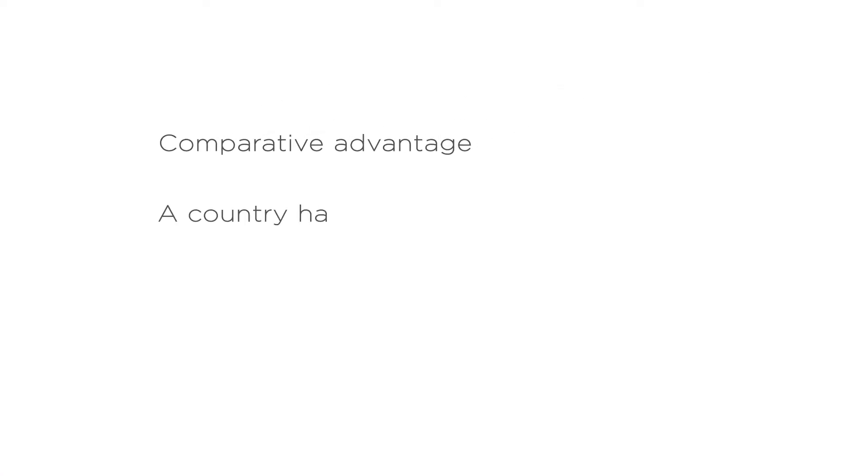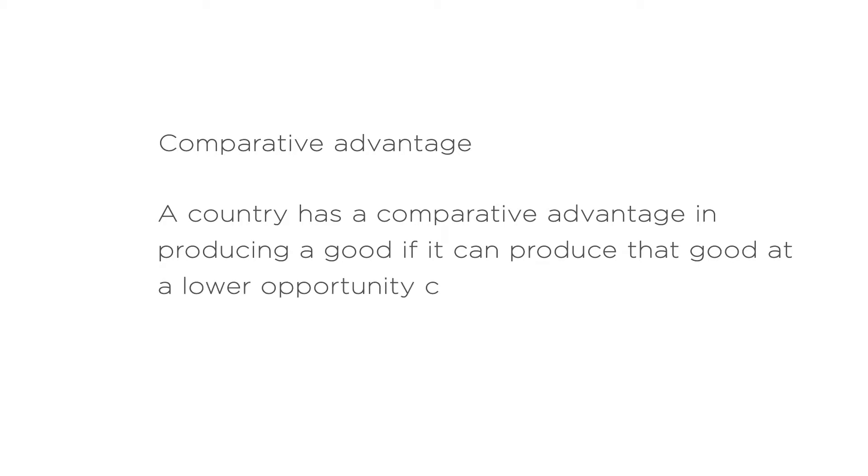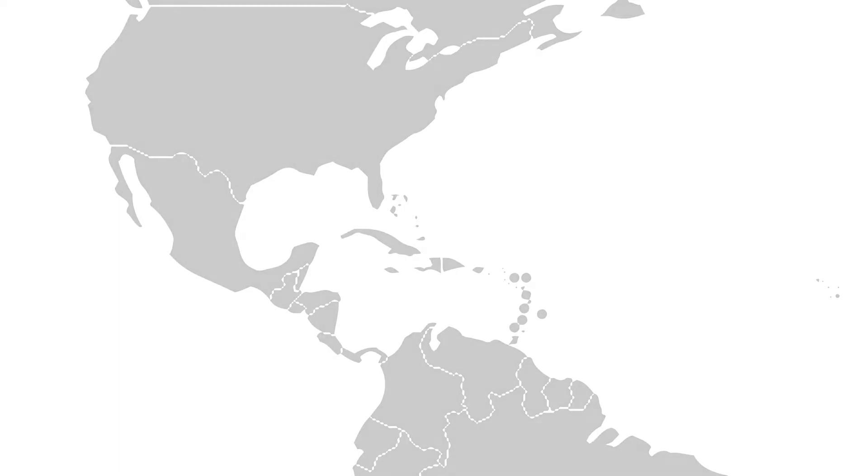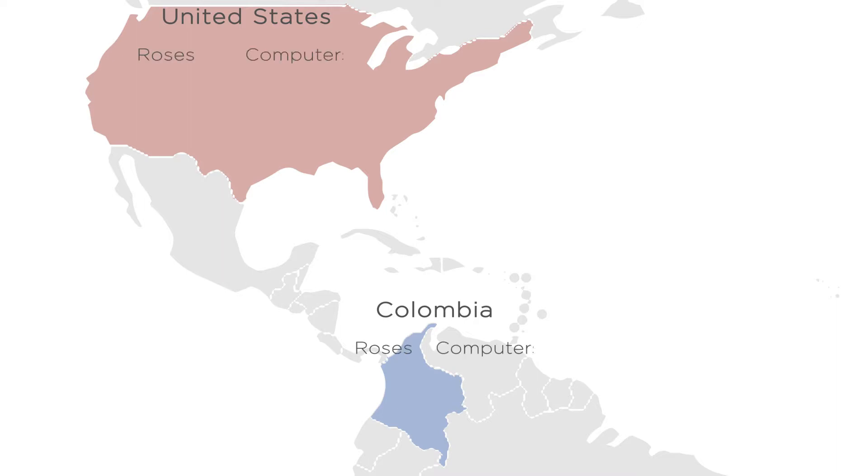The second concept important for understanding international trade is that of comparative advantage. A country has a comparative advantage in producing a good if it can produce that good at a lower opportunity cost than any other country. Let's take a simple example of only two countries, the U.S. and Colombia. And let's say each country produces only two goods: roses for Valentine's Day and computers. Resources devoted to producing one good can't be devoted to producing the other. So the opportunity cost of producing a rose is producing fewer computers, and the opportunity cost of producing computers is producing fewer roses.